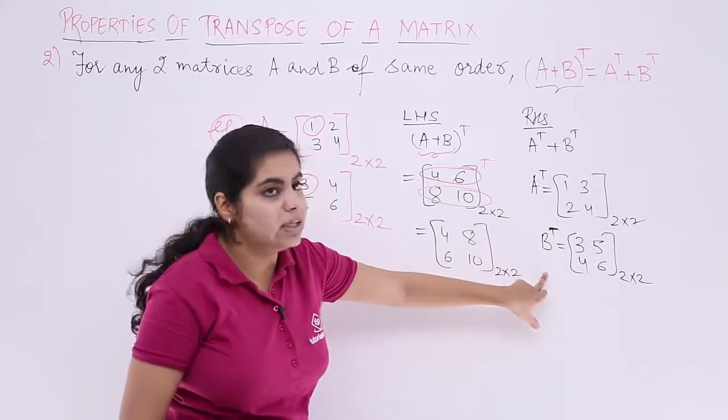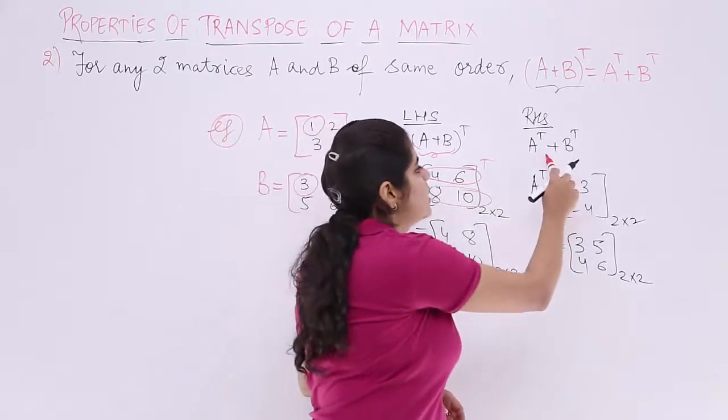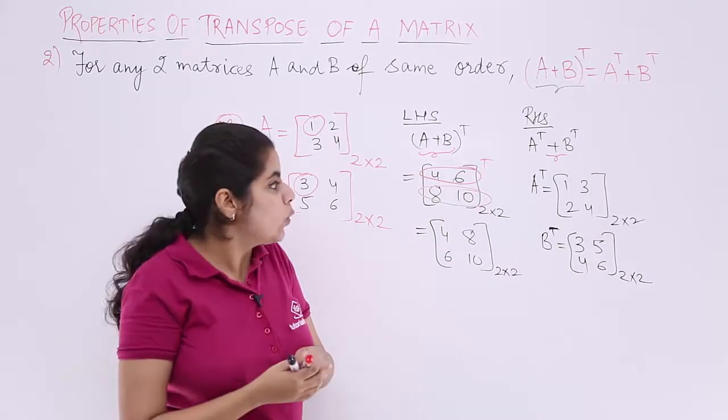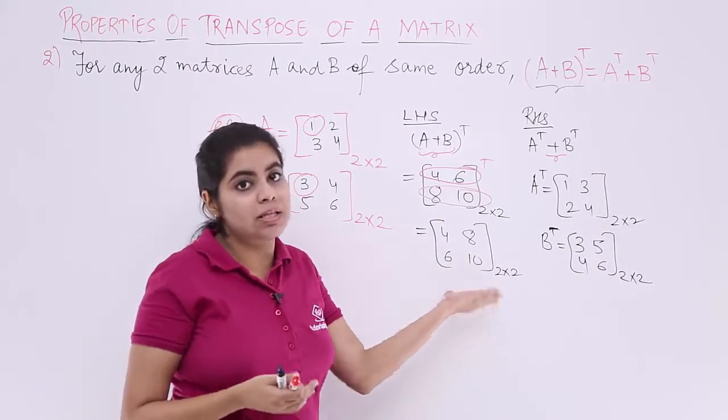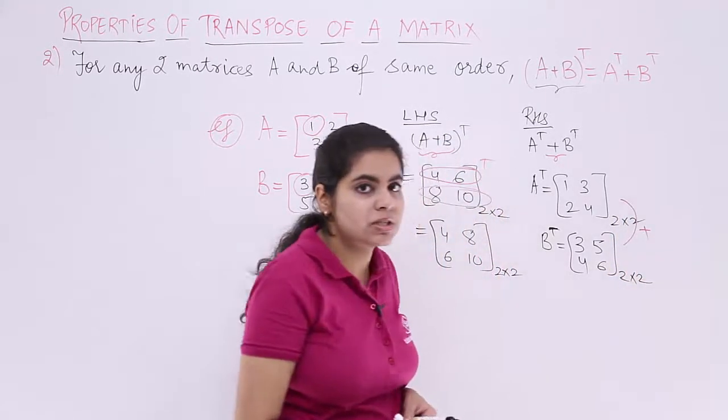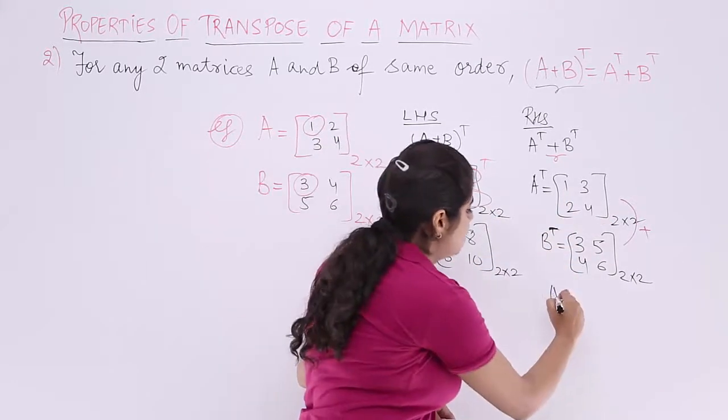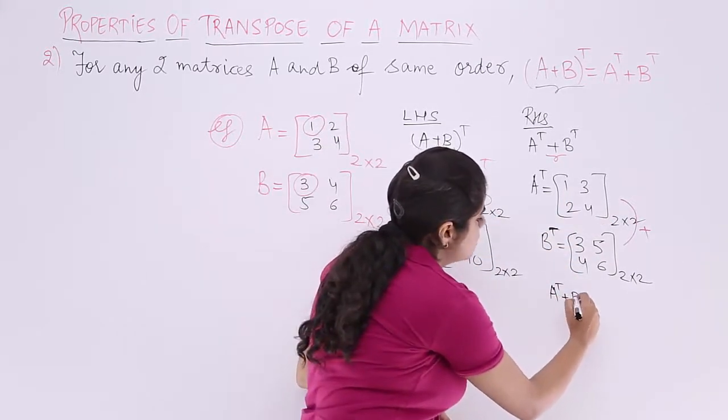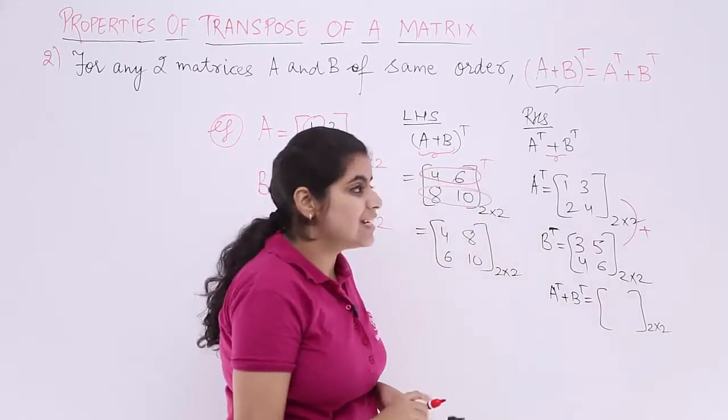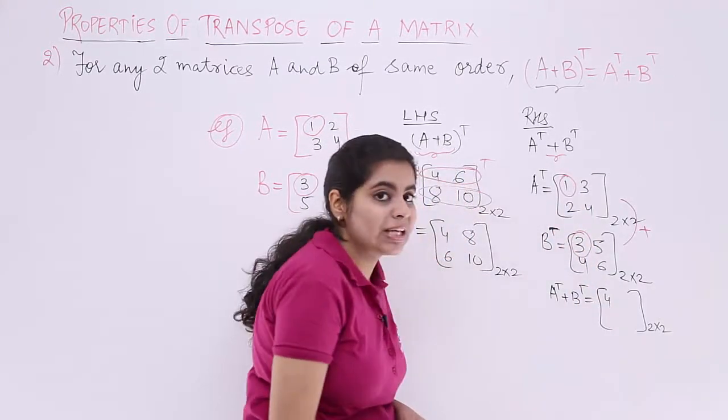Now these things are already given to us. A transpose found out. B transpose found out. What is left? You need to add them. Adding them will give me a new matrix which should be same to this if the property follows. Let's see. You add these numbers individually. So 1 plus 3 is 4. So I write the result here. A transpose plus B transpose is again a 2 by 2 matrix and the result is 1 plus 3 is 4.